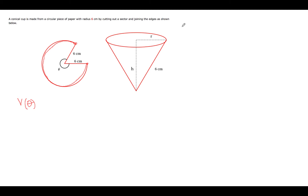We are going to need some things. One of the things we will need is the formula for the volume of a right circular cone: one third pi r squared h. So we have our radius and our height, but this needs to be expressed in terms of the angle theta. Let's see if we can express r and h in terms of theta.